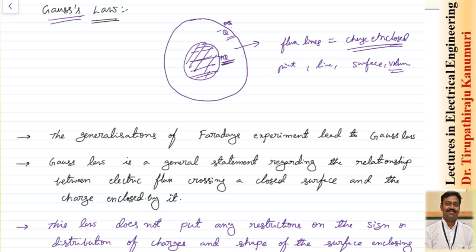For example, if different charges are kept — say plus Q, minus Q, and plus 2Q — the net charge enclosed will be plus Q plus 2Q minus Q, which equals 2Q. So the total net charge is 2Q, and the flux coming out will be equal to 2Q. This is independent of the location of the charges inside the surface, independent of the shape of the enclosing surface, and independent of the medium in which the charges are kept.